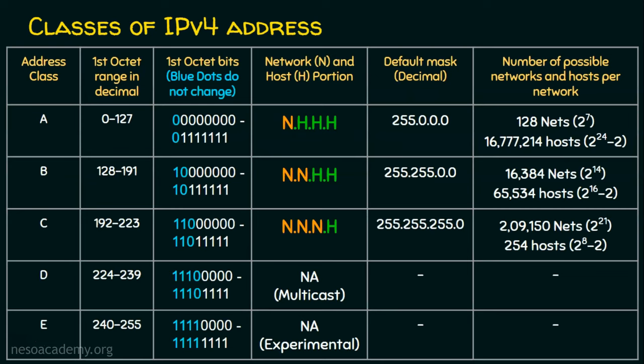In classful IPv4 addressing, we have 5 classes of IPv4 addresses: Class A, B, C, D, and E. Classes A, B, and C are used for general purpose. Suppose if we want to create a network with 200 devices, we can obviously go for Class C. Any Class C network can cater up to 254 hosts.